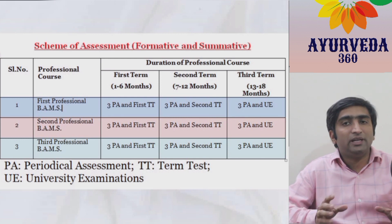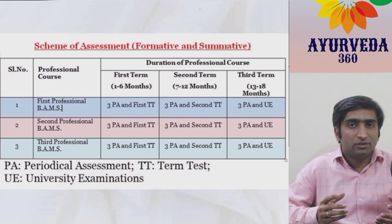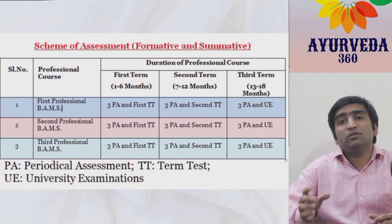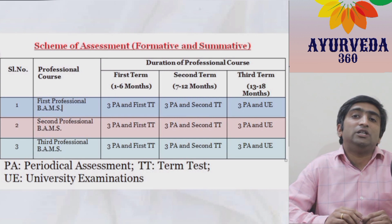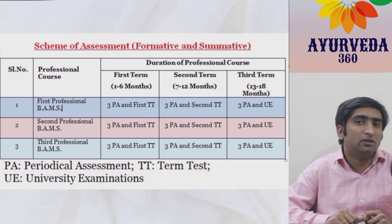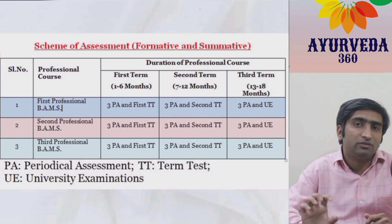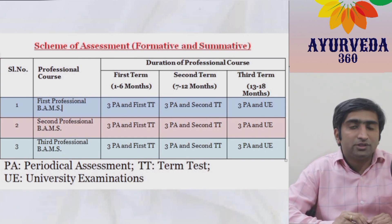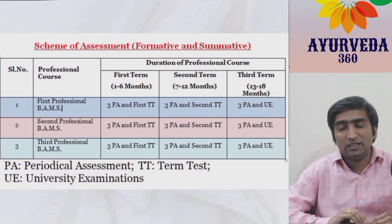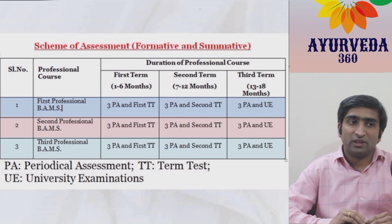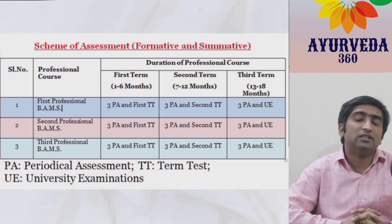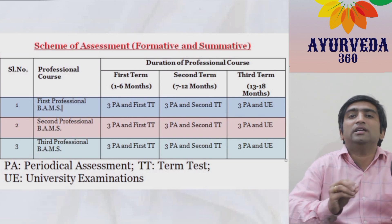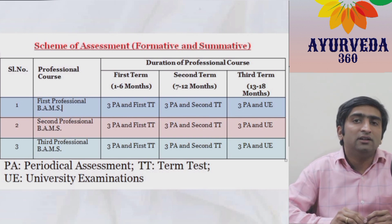Periodic assessment continues for the remaining portion covered, including revision classes, left to the concerned subject teacher. Ultimately those reports are collected. At the end of one and a half years, the student gives the university exam — up to this point only the institution was conducting assessments, but now it is the turn of the university. The question paper and all evaluation methodology will follow university rules, called university examination (UE). This exam includes not just theory but also practicals and other components.